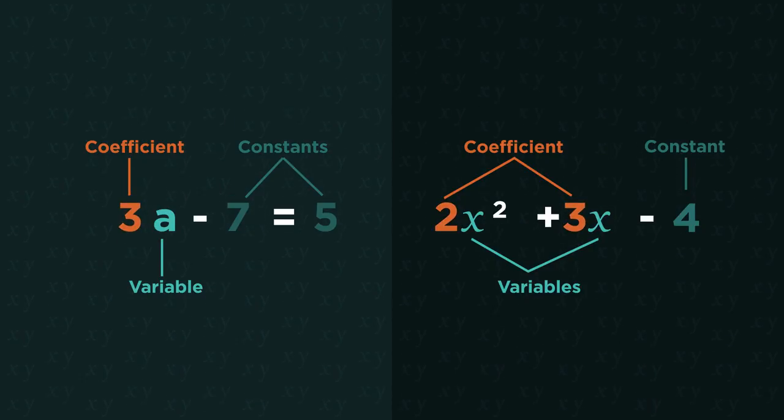They are different to constants because coefficients always multiply by a variable. A number and a letter is a coefficient and a variable, but a number on its own is a constant.